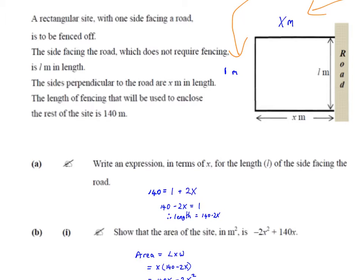It says a rectangular site with one side facing a road is to be fenced off. The side facing the road, which does not require fencing, is l meters in length. The sides perpendicular to the road are x meters in length. The length of fencing that will be used to enclose the rest of the site is 140 meters. So these three sides here are enclosed by fencing which is 140 meters in length. That sounds a little bit like perimeter.